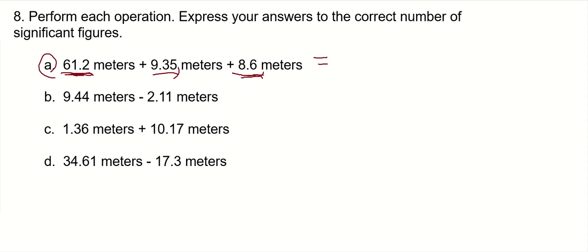61.2 plus 9.35 plus 8.6, I get 79.15. So 79.15 is what your calculator shows. Your calculator doesn't know what sig fig rules are, right?